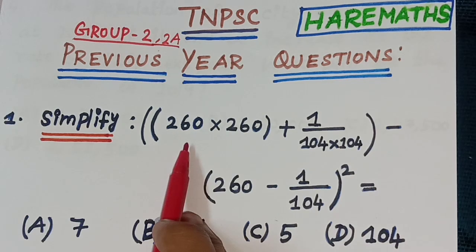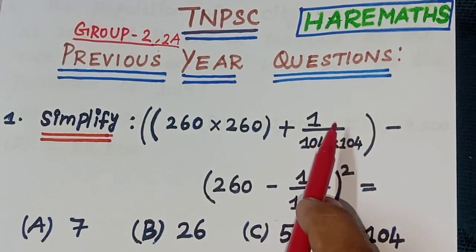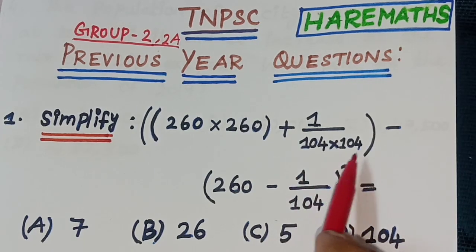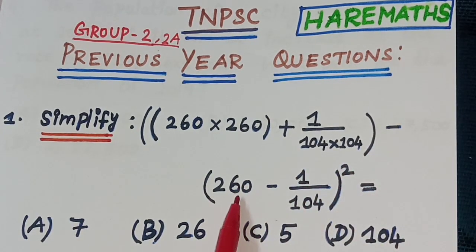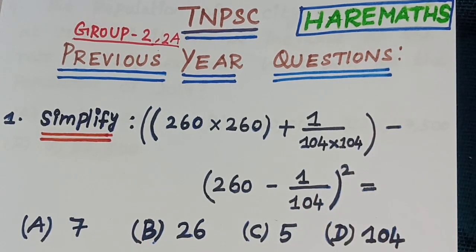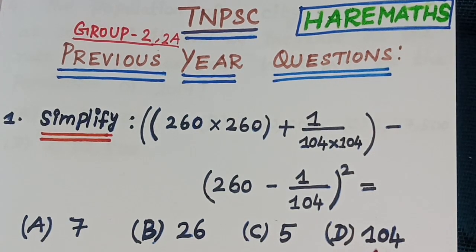Simplify: 260 × (260 + 1/104) × (104 − 260 − 1/104) whole square. Options: A) 7, B) 26, C) 5, D) 104.